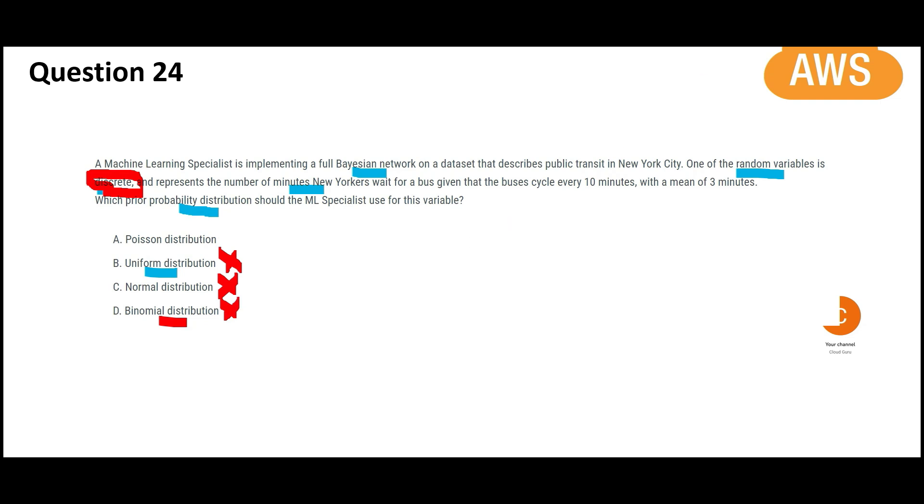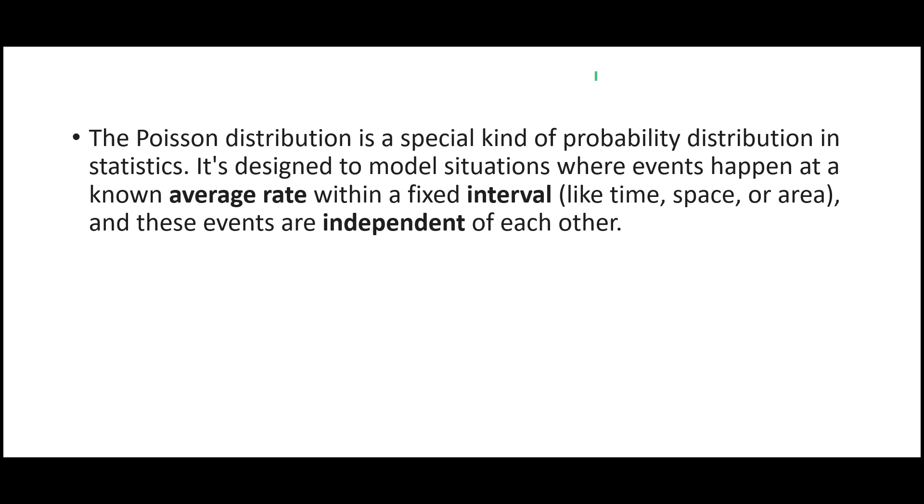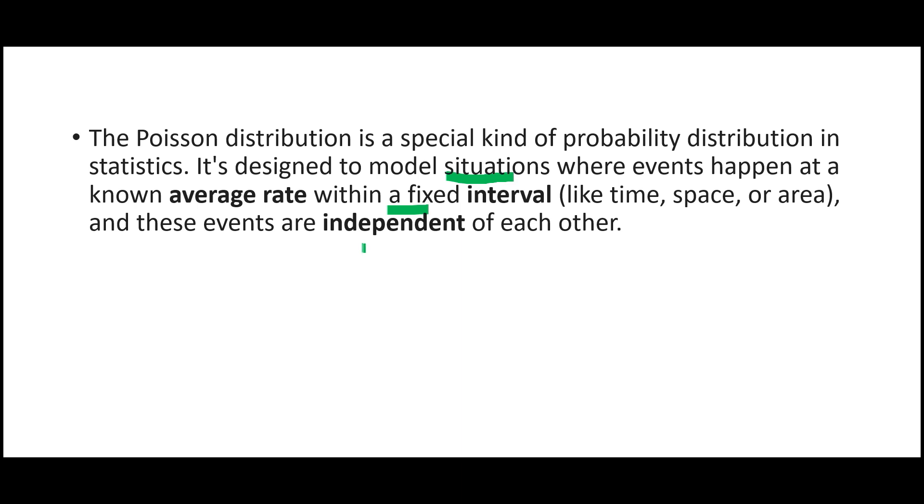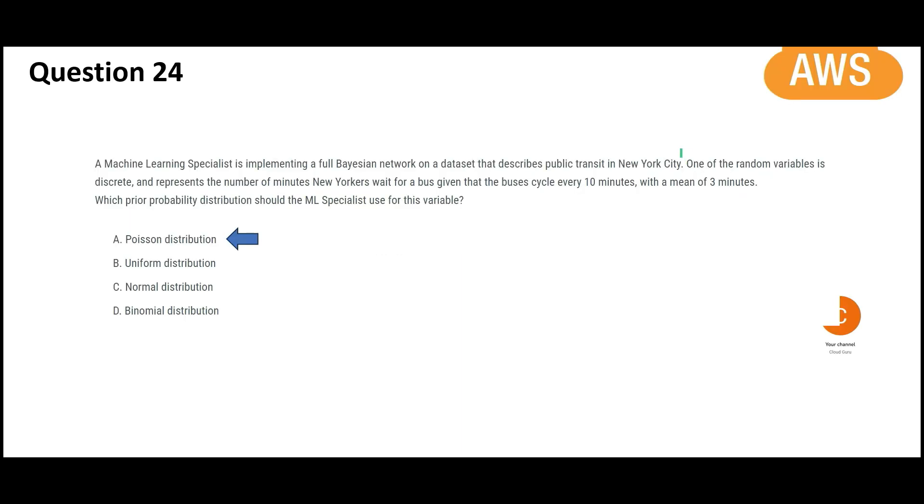We will have to go with Poisson distribution. This distribution is very special. It works with this unknown, uncertain kind of thing. It is designed to model situations where events happened at an average rate within the fixed interval. In our question, this is a fixed interval. We have some kind of average rate. And if these events are independent of each other. That is what a Poisson distribution is used for. So our final answer is option A, Poisson distribution.